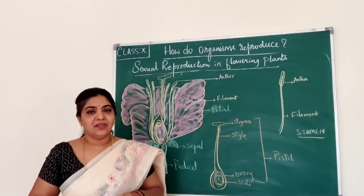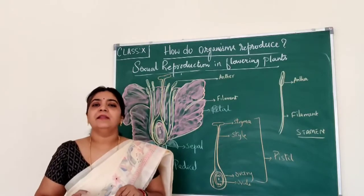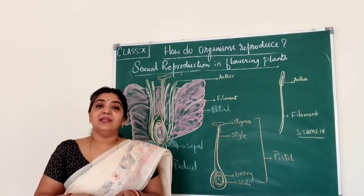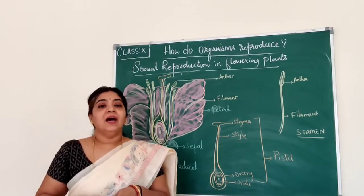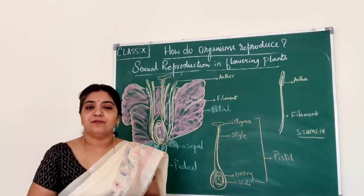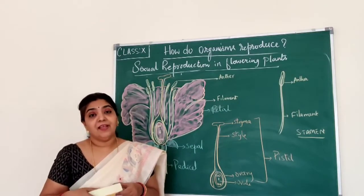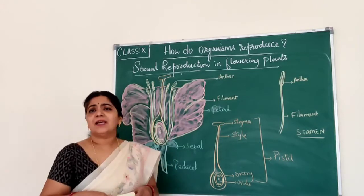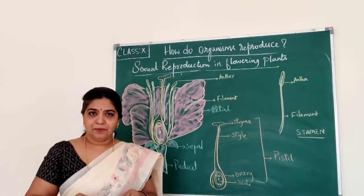With sexual reproduction in flowering plants — when I say flowering plants, they are nothing but the higher plants, that is the angiosperms. Angiosperms are the most evolved plants. They are the plants which have their reproductive organs well formed. So flowering plants are nothing but the angiosperms. Let us see sexual reproduction in the flowering plants.